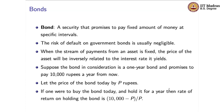One interesting finding is that when the stream of payments from an asset is fixed — as is the case for a bond with negligible default risk — the price of the asset will be inversely related, meaning negatively related, to the interest rate it yields. Consider a one-year bond that will make its final payment in one year's time, promising to pay 10,000 rupees. This is the only single payment this bond will make, and once that payment is made, its term is over.